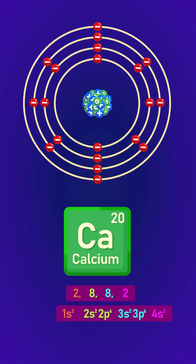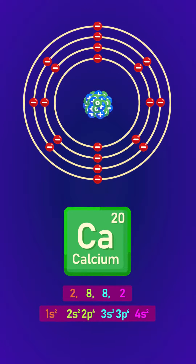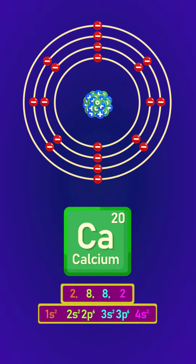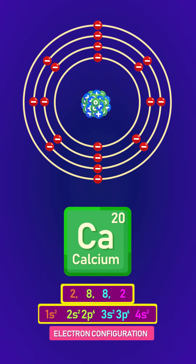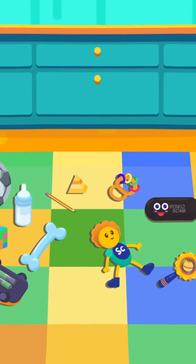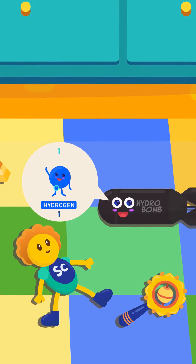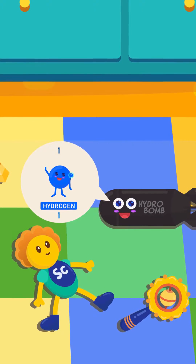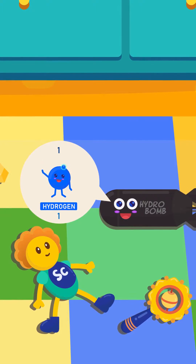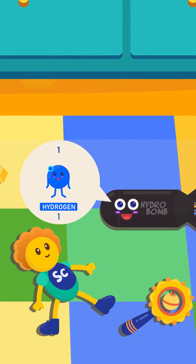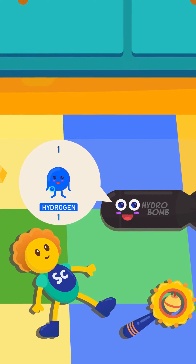The arrangement of electrons in an atom can be represented using a diagram called electron structure or the electron configuration. For example, the hydrogen element has a proton number of one, also known as atomic number, and hence has one electron in total. This means it can only fill the first shell with one electron.